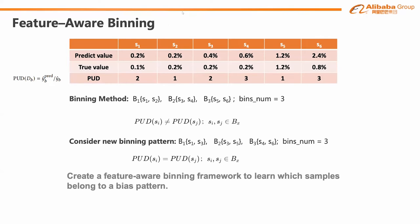For traditional binning methods, if we happen to put samples with the same true probabilities into the same bin, the calibration result will be near perfect. This situation can be extended to a specific calibration function for each bin, not just a constant function in traditional binning. An intuition is that the bias pattern between the prediction on X and the expectation of Y would have different patterns related to X that can be captured by machine learning methods. Therefore, we propose a feature-aware binning framework to learn which samples belong to a bias pattern, employing a model M that takes features X as input and optimizes the MVCE.